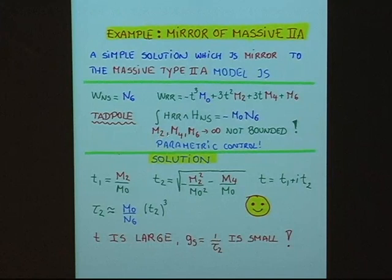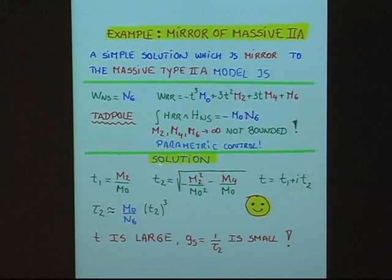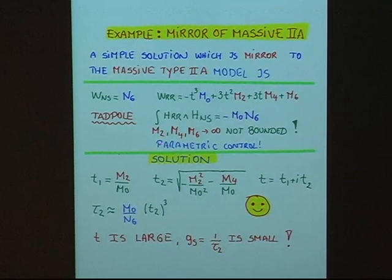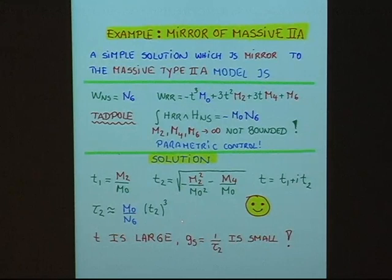What we have is small parameters 1 over the quantum numbers, which we can use in perturbation theory. Writing down the concrete form of our solution from D_T W = 0, the real part of T is given by M₄/(3M₂), the imaginary part of T is given by M₂-dependent expression, and tau is given accordingly. We see that since we can send M₂ and M₄ to infinity, T can be made very large. τ₂, which is the inverse of g_s, can also be made very large, meaning g_s is very small. So we have found a solution to AdS₄ with parametric control, large complex structure, and small g_s.